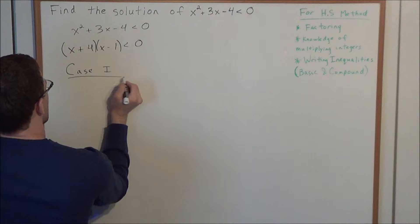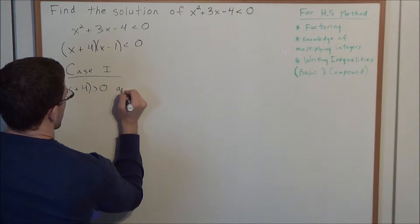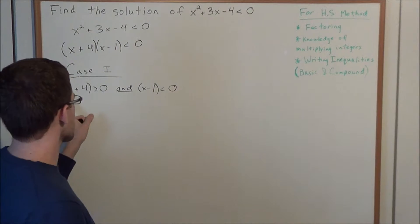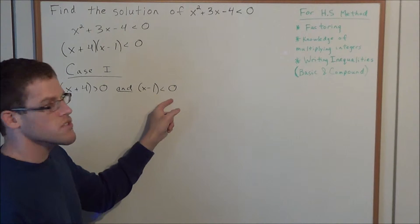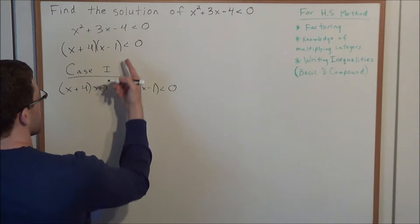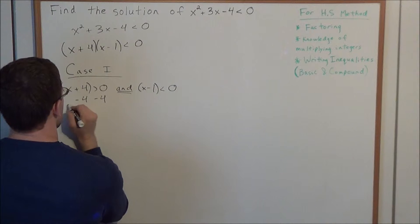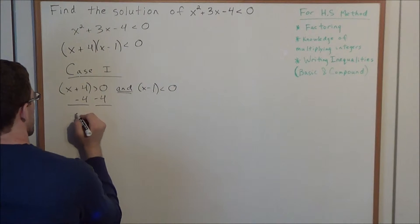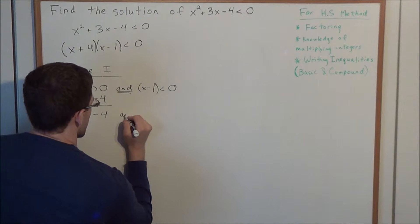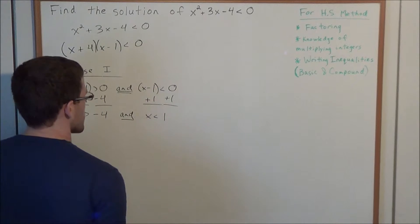In the first case, let's consider the case where x plus 4 is greater than zero. When this is true, then we have that x minus 1 has to be less than zero. So x plus 4 is greater than zero AND x minus 1 is less than zero. This AND statement is really important because both need to be true in order to satisfy this inequality for case 1. Solving each individual inequality: by subtracting 4 from both sides, we have x is greater than negative 4. Adding 1 to both sides of the second, we have x is less than positive 1.